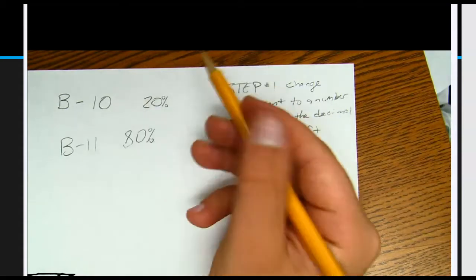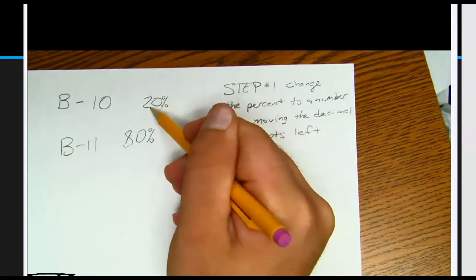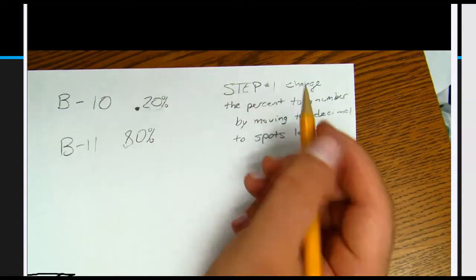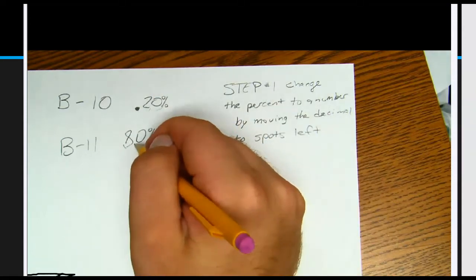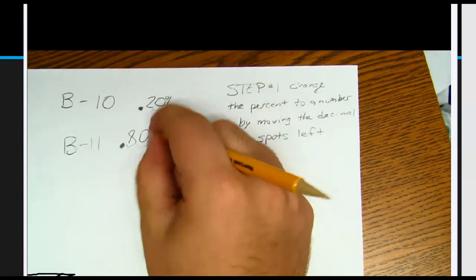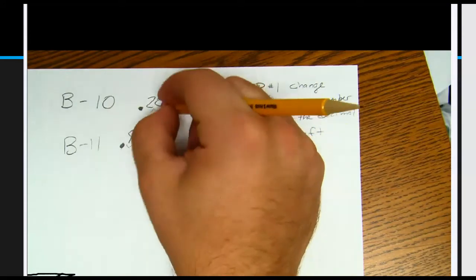So here's my decimal right here, it's kind of invisible. So I'm going to move it one, two. So there's my new decimal. One, two. There's my new decimal. So now I can get rid of my percentages because now I have my numbers.